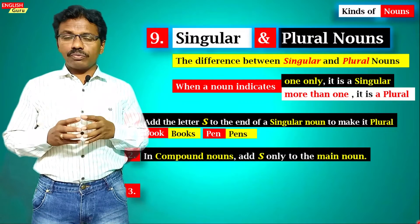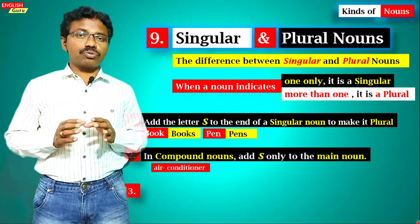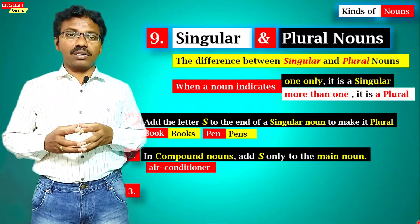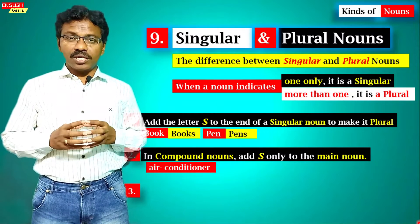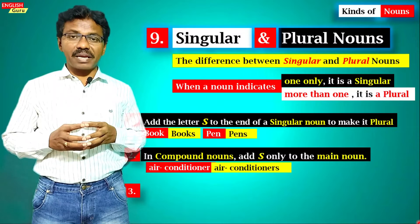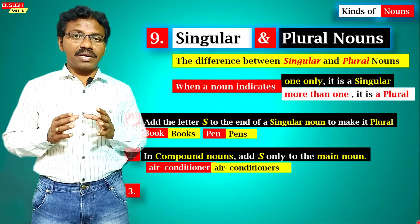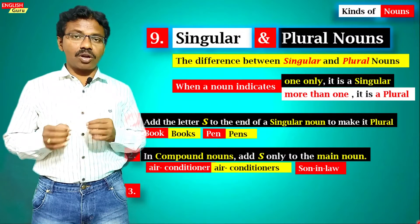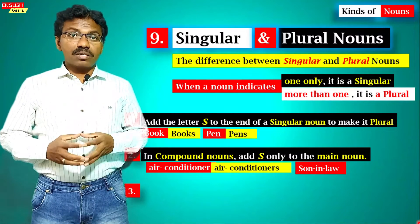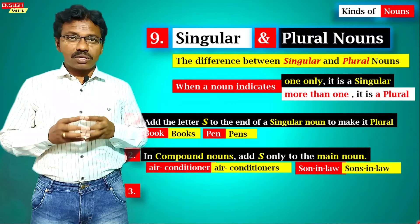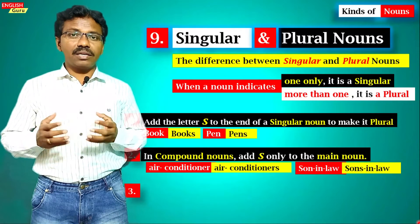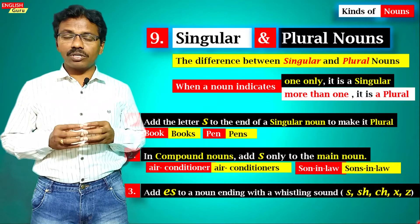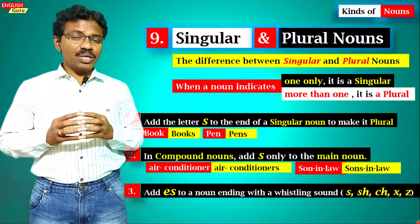In compound nouns, we add 's' to the main noun. For example, 'air conditioner' becomes 'air conditioners' — 's' is added to 'conditioner,' not 'air.' Similarly, 'son-in-law' becomes 'sons-in-law' — 's' is added to 'sons,' the main noun.